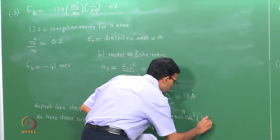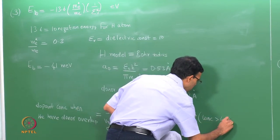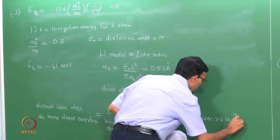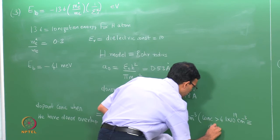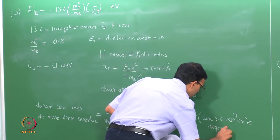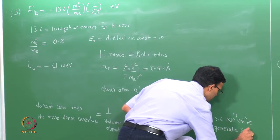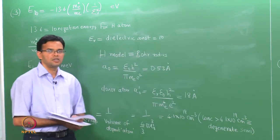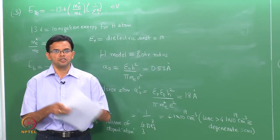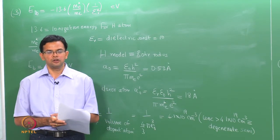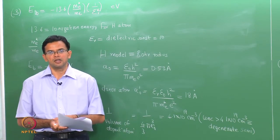To calculate the dopant concentration for donor overlap, we use one over the volume of the sphere of influence: 1 / (4/3 · π · a₀'³). This works out to be 4.1 × 10^19 per centimeter cube. At this concentration and higher values, donor atoms are too close and atomic levels mingle to form a donor band, determining the conditions for a degenerate semiconductor.